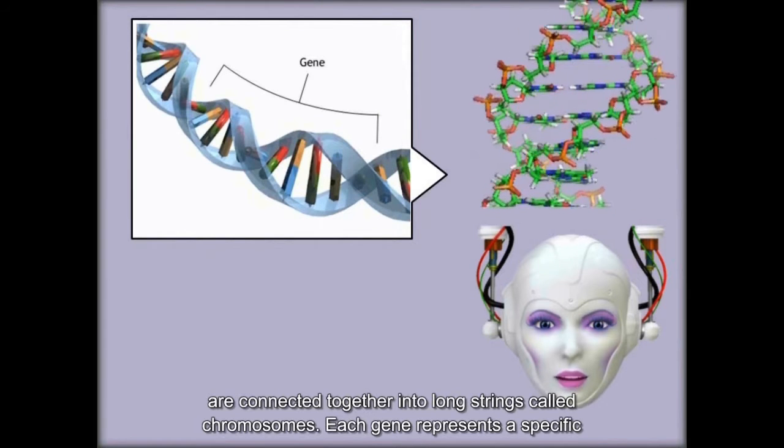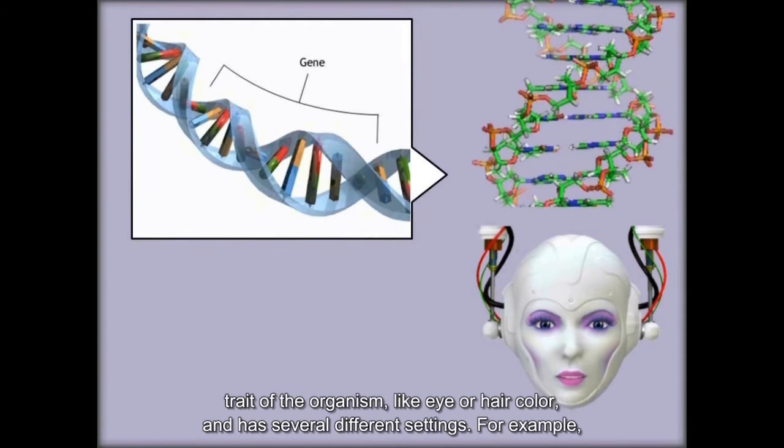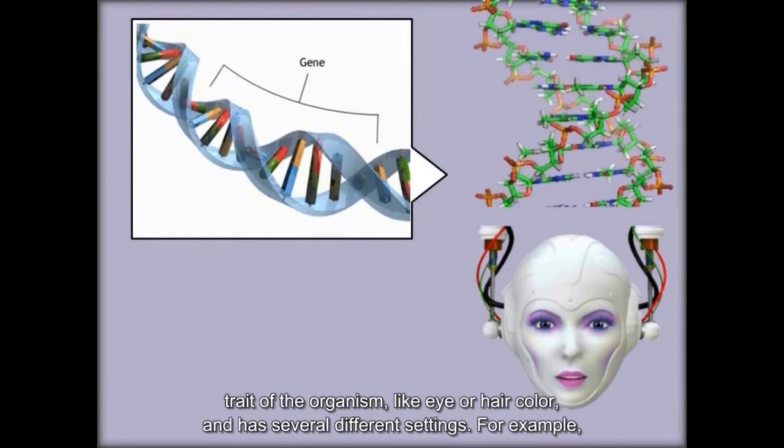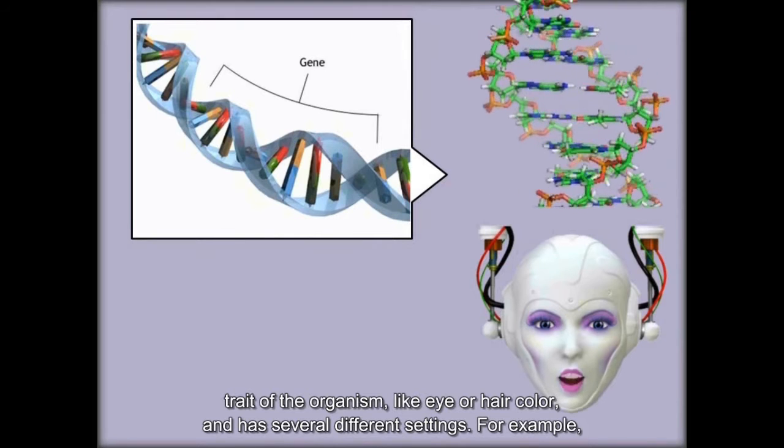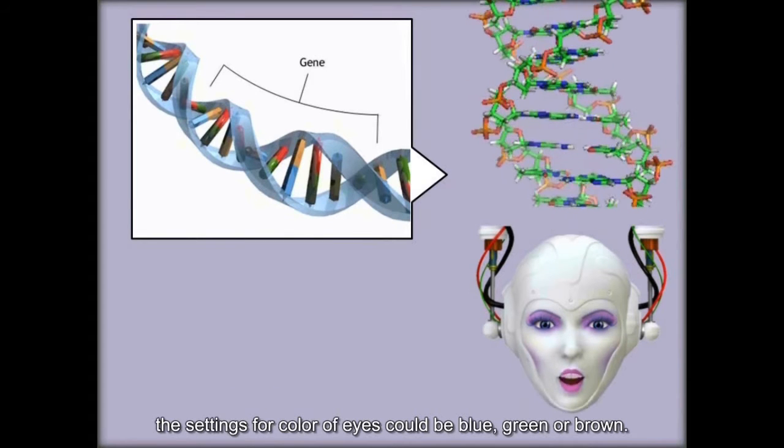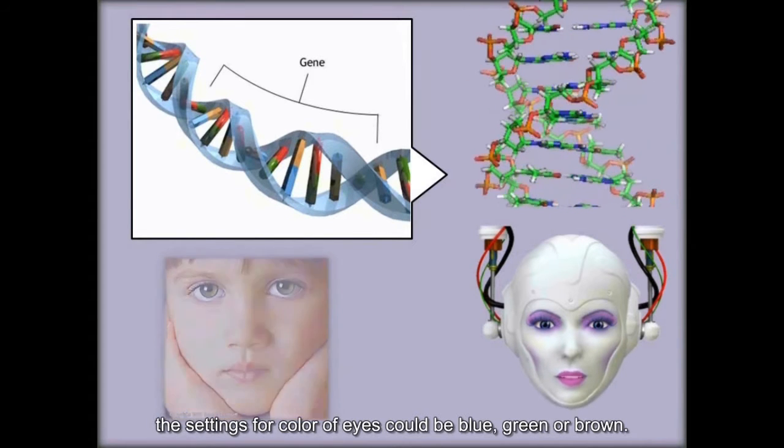Each gene represents a specific trait of the organism, like eye or hair color, and has several different settings. For example, the settings for color of eyes could be blue, green, or brown.